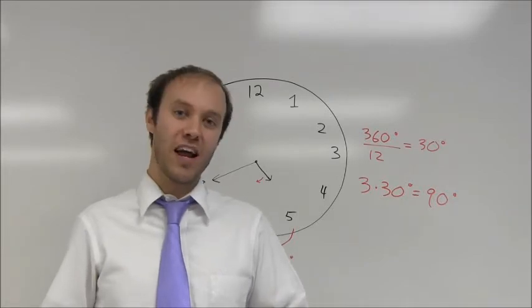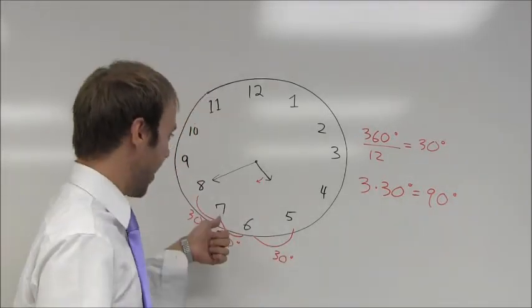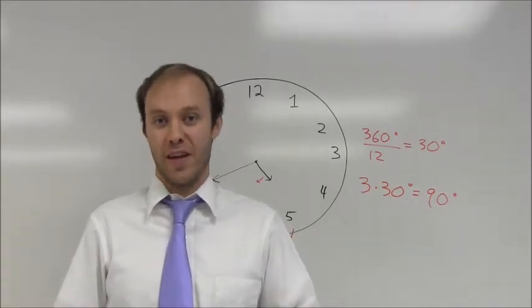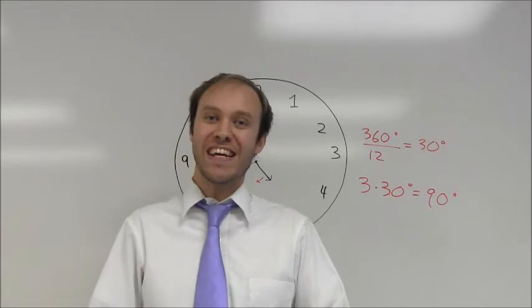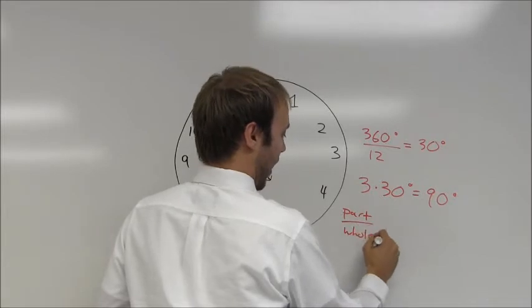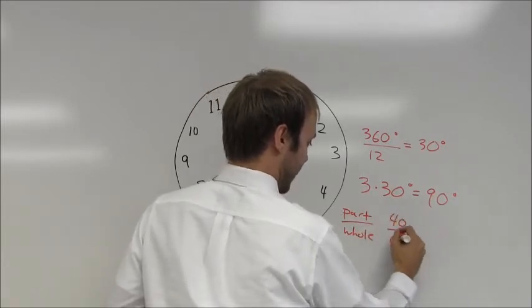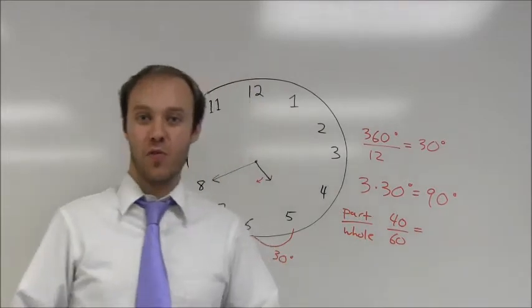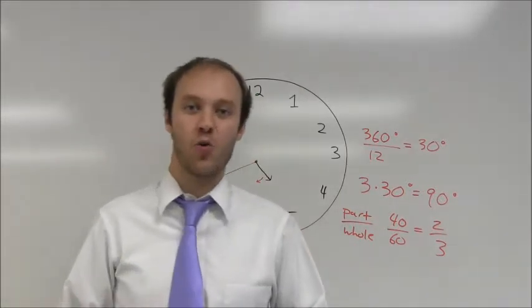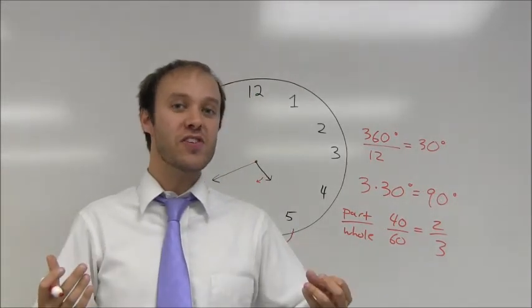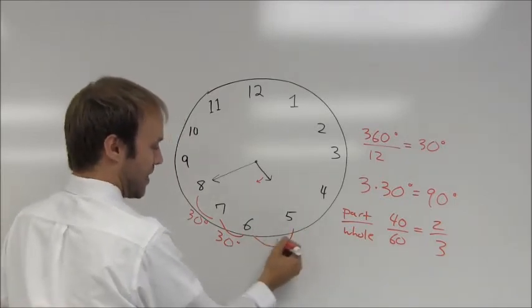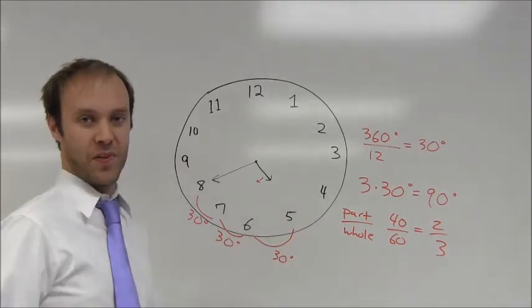Well, if you think about it, an hour has 60 minutes. It's 5:40. I've moved a part of the hour that corresponds to 40 minutes. So, I am 40 sixtieths of the way through the hour. That is my part of my hour out of the whole hour. So, 40 minutes out of 60 minutes. Simplify 40 sixtieths, simplifies down to two thirds. So, I am two thirds of the way through the hour, which means I'm two thirds of the way through the 30 degrees between the five and the six on the clock.